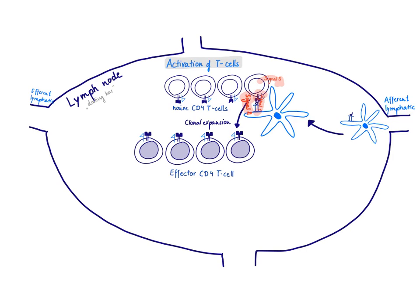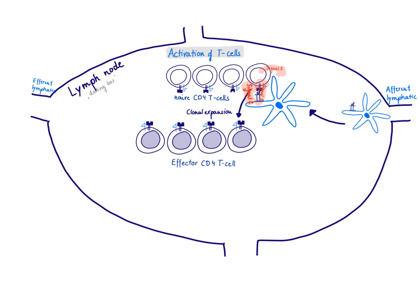So we have now discussed the production of effector CD4 T cells, which are also known as the T helper cells. And these T helper cells, as the name already implies, the effector function is to help, to help other cells to do a better job.